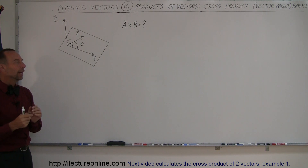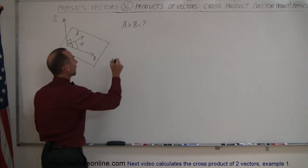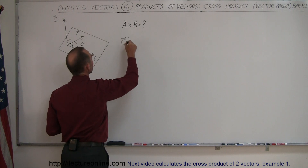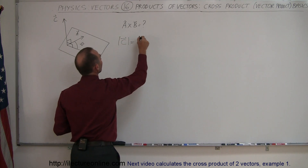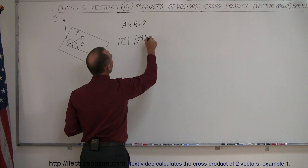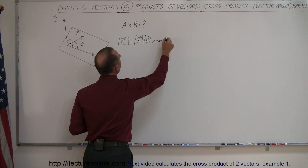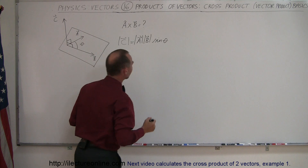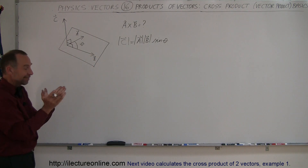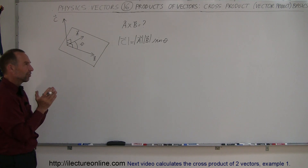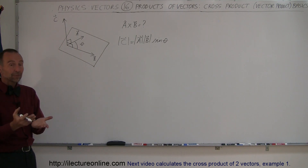Let's learn about the magnitude of vector C. The magnitude of vector C is equal to the magnitude of A multiplied by the magnitude of B times the sine of the angle between them. If the angle between A and B is 90 degrees, sine of 90 degrees is 1, so the magnitude of C is simply A times B.